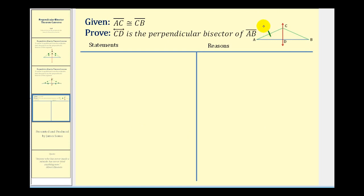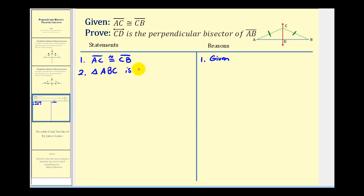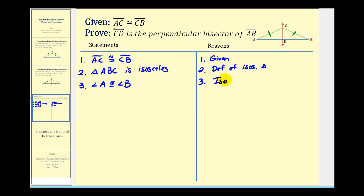We're given that segment AC is congruent to segment CB, and we want to prove that line CD is the perpendicular bisector of segment AB. Step one: state the given. Step two: triangle ABC is an isosceles triangle — this is by definition of an isosceles triangle. Step three: angle A is congruent to angle B — this is by the Isosceles Triangle Theorem. Let's go ahead and mark that.